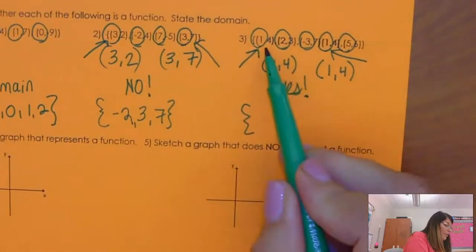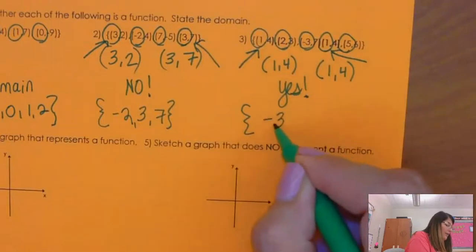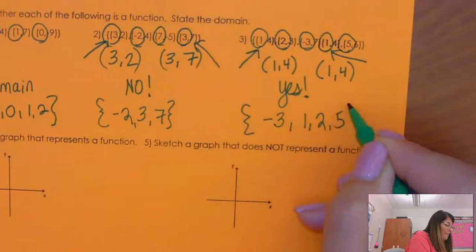Now, what is the domain? 1, 2, negative 3, 1, and 5. So in order, negative 3, 1, 2, and 5.